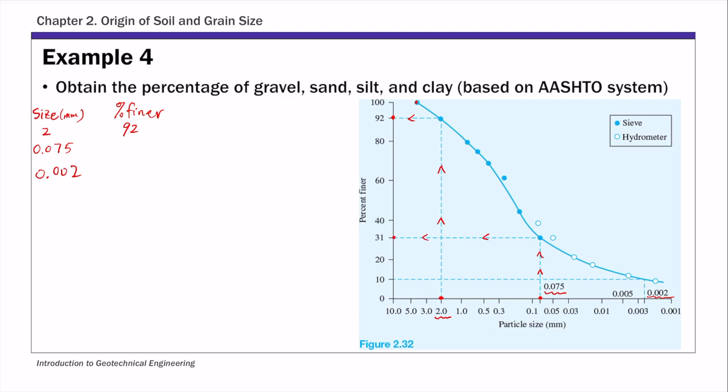So this is 31%. And then for that 0.002, you start from 0.002 on the x-axis, and then find the corresponding y-axis, that's your percent finer, which is 10%. Okay. So you've got these values of percent finer corresponding to 2, 0.075, 0.002.